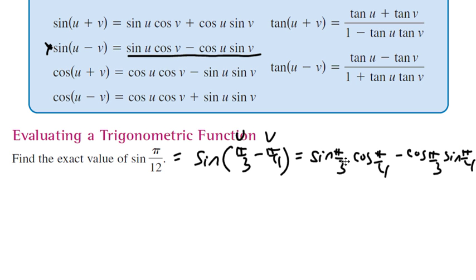Simplifying, sine of pi over 3 is radical 3 over 2, cosine of pi over 4 is radical 2 over 2, cosine of pi over 3 is a half, sine of pi over 4 is radical 2 over 2.